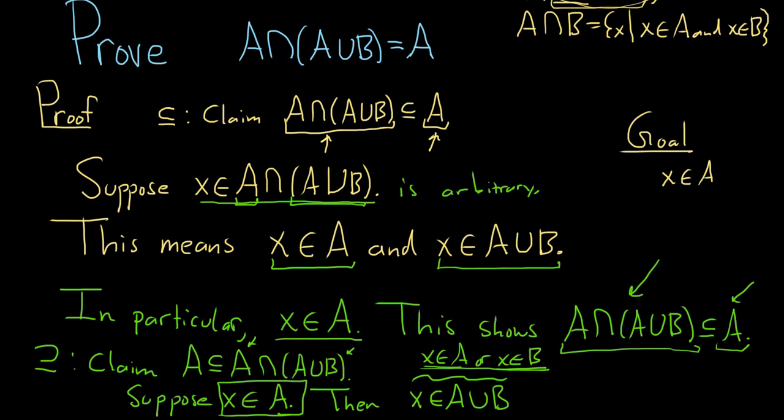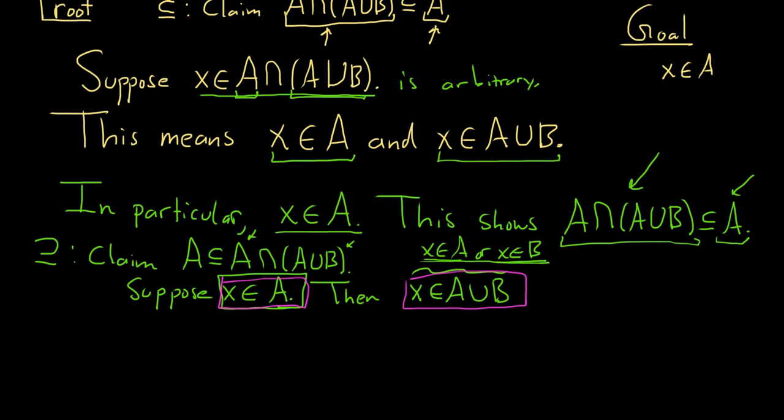So now we have two conditions. Let me switch the colors here. We have X in A, and we have X in A union B. So let's emphasize that. So then we have X in A, and X in A union B, because we have both statements, so we can put the and there.